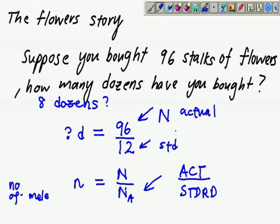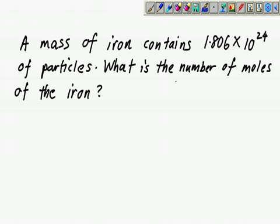Example calculation: a mass of iron contains 1.806 times 10 power 24 particles. What is the number of moles of the iron? In fact asking what is the chemistry dozens in this case of iron. This NA will always be given, the constant will always be given.